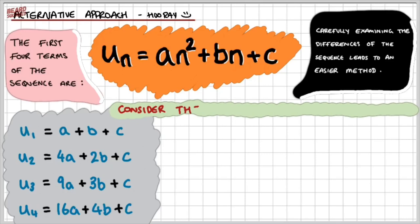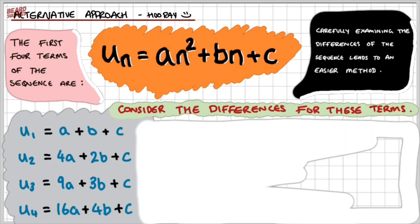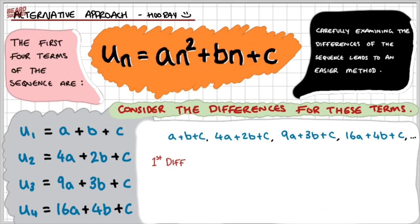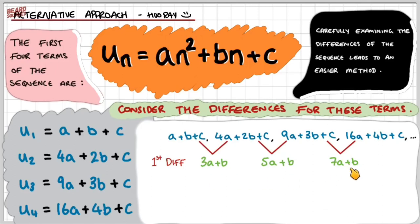So the next step is that we're going to consider the differences between these terms. The first term is a plus b plus c, the second is 4a plus 2b plus c, the third is 9a plus 3b plus c, and the fourth is 16a plus 4b plus c. The first difference between consecutive terms: 4a plus 2b plus c minus a plus b plus c gives 3a plus b. The next consecutive difference is 5a plus b, and the next is 7a plus b.